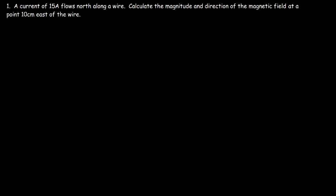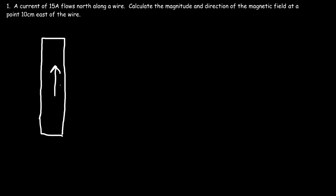A current of 15 amps flows north along a wire. Let's draw a picture: we have a wire with current flowing in this direction. Calculate the magnitude and direction of the magnetic field at a point 10 centimeters east of the wire. So east is this direction, 10 centimeters away — we wish to calculate the magnetic field at that point.